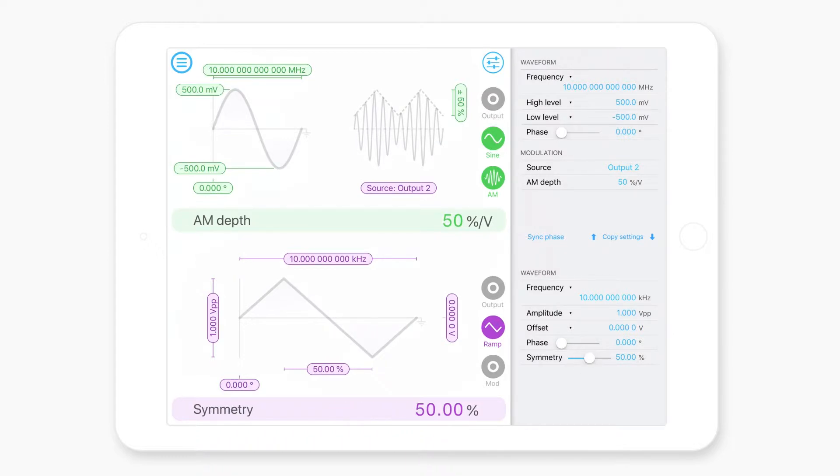What's really cool is that as I adjust the symmetry of the waveform on channel two, it updates the waveform, the modulated waveform on channel one. And this is a really neat feature if you need to modulate the waveform with some exotic shape.